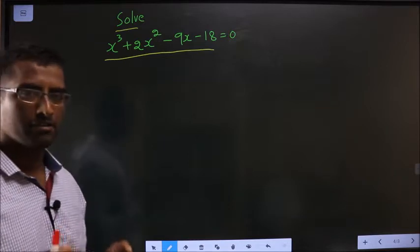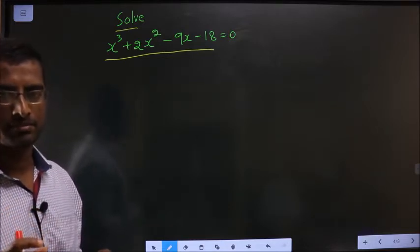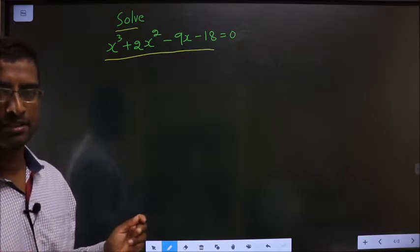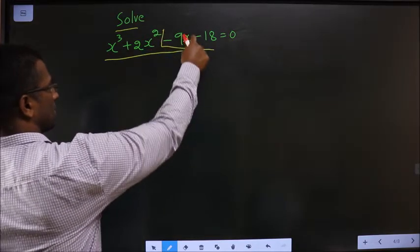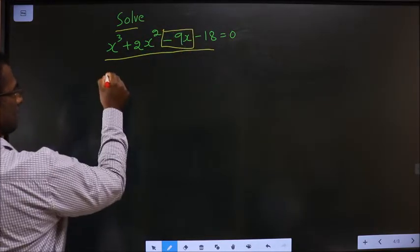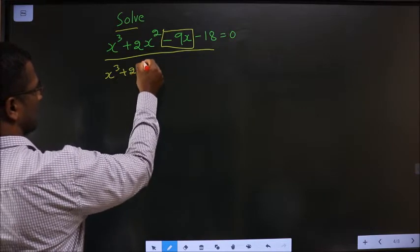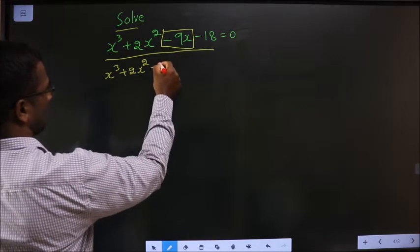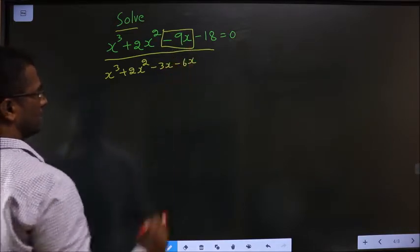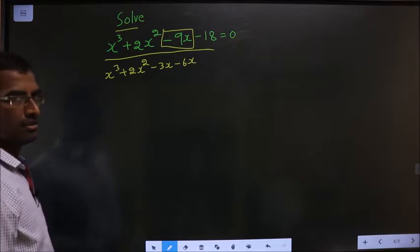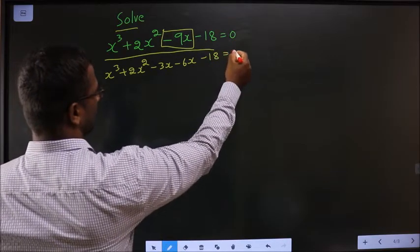Remember, even while factorizing we used to change the x term. Here also I should change the x term only, which is minus 9x. So I change minus 9x to minus 3x minus 6x. Minus 3 minus 6 is minus 9. Minus 18 equal to 0.